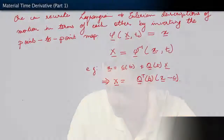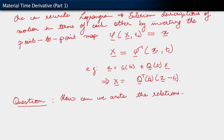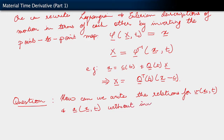So here's the question: how can we write the relations for the Eulerian quantities — in particular, how do we write the relations for the Eulerian velocity V and the Eulerian acceleration A — without inverting the motion phi?